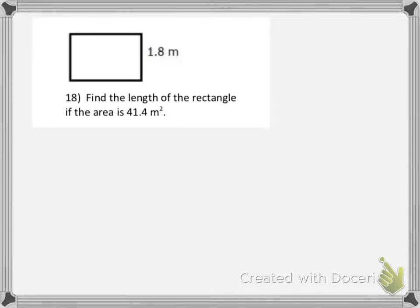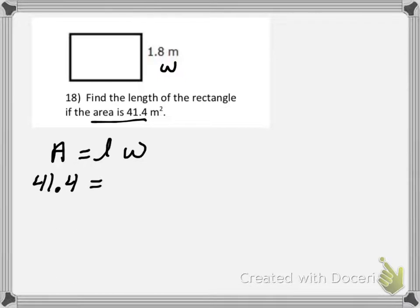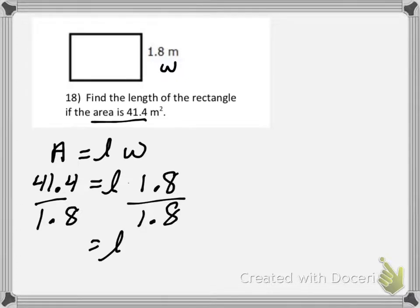In question 18, we're given the width of the rectangle, which is 1 and 8 tenths, and the area of 41 and 4 tenths, and we need to find the length. Substituting into area equals length times width: 41.4 equals length times 1.8. To find the length, we divide both sides by 1 and 8 tenths — this is like a one-step equation. Dividing gives a length of 23. So the length is 23 meters.